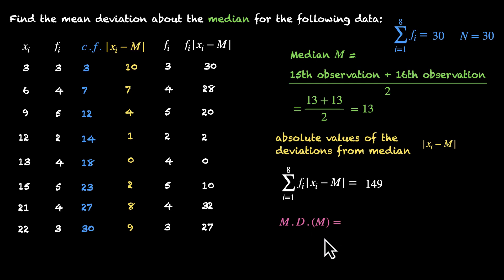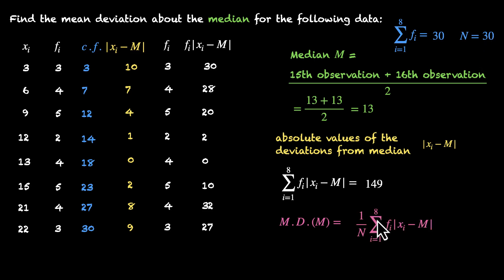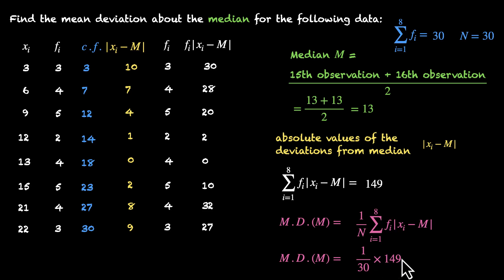Our mean deviation about the median is this value divided by the total number of entries: 149 divided by 30. That's (1/n) × Σfi|xi − m| = 149/30. As an approximation, 150/30 = 5, so the value is approximately less than 5. The exact value is 4.97. So our mean deviation about the median is 4.97.